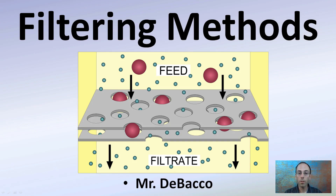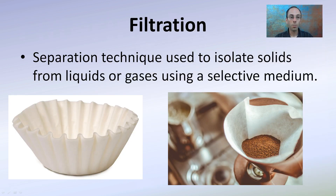Here I'm going to go over different types of filtering methods. Even though the basic idea might be the same, there's different methods to approach it, and that will depend on the protocol or the materials you're looking at filtering. Here we have a feed, here we have a barrier, and then we have the filtrate. Filtration is a separation technique used to isolate solids from liquids or gases using a selective medium — most familiar with coffee and filter paper used to isolate coffee grounds.